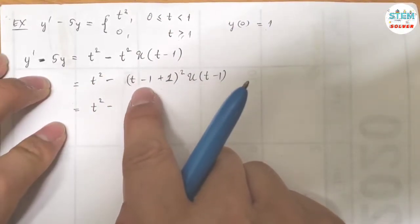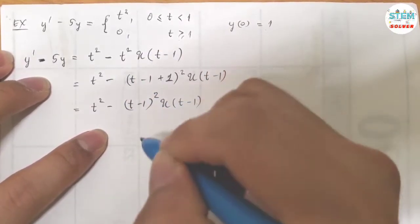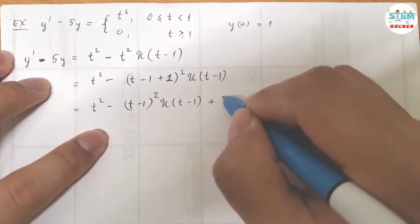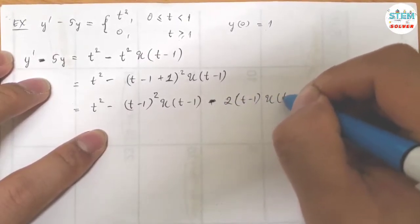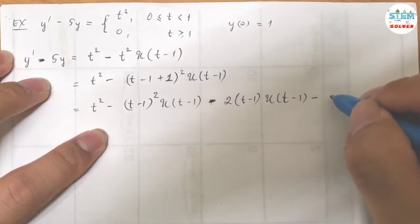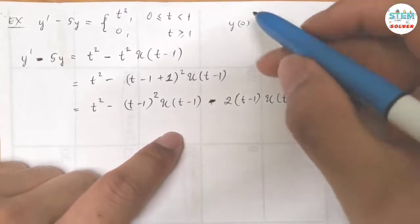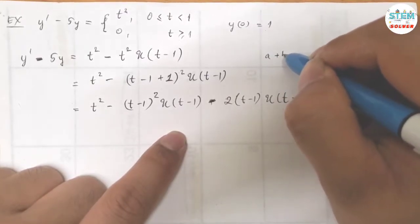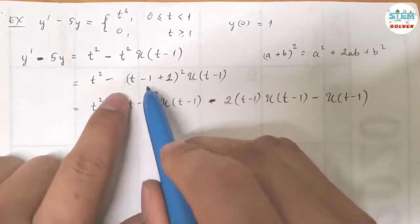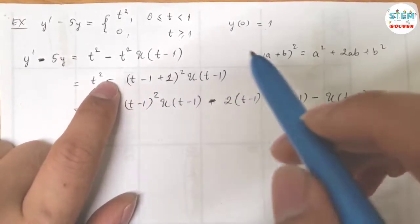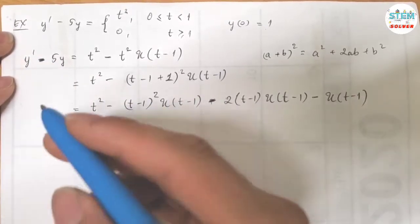Now distribute, treating t minus 1 as a group. So I have (t minus 1) squared times u(t minus 1), plus 2(t minus 1) times u(t minus 1). The reason: if you have (a plus b) squared, you get a squared plus 2ab plus b squared — here a is (t minus 1) and b is 1 — and I distribute the negative in front. Now we can take the Laplace Transform easily.